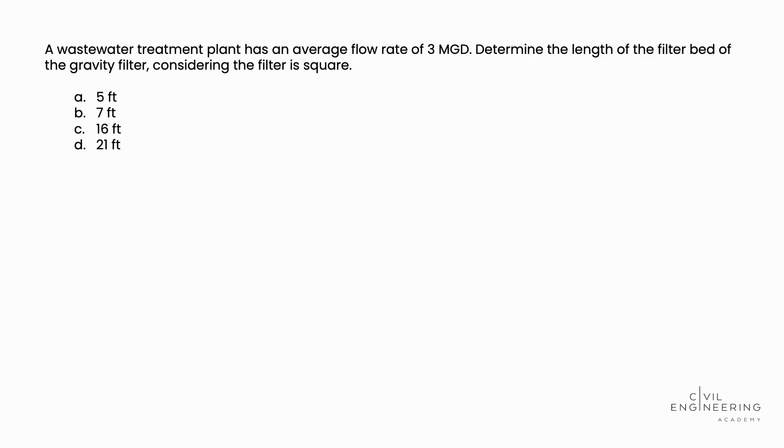A wastewater treatment plant has an average flow rate of 3 million gallons per day, or MGD. Determine the length of the filter bed of the gravity filter, considering the filter is square.